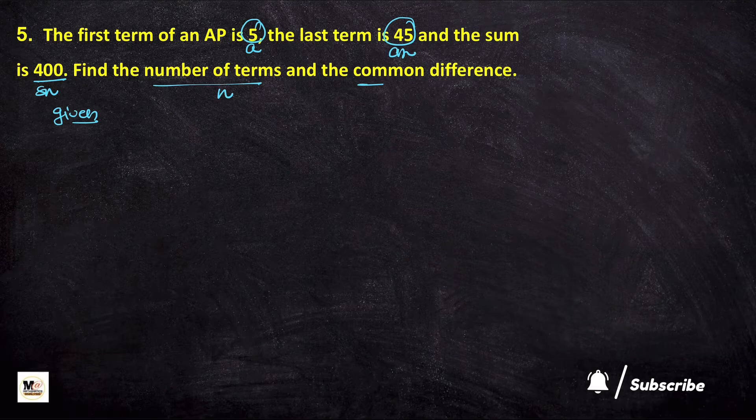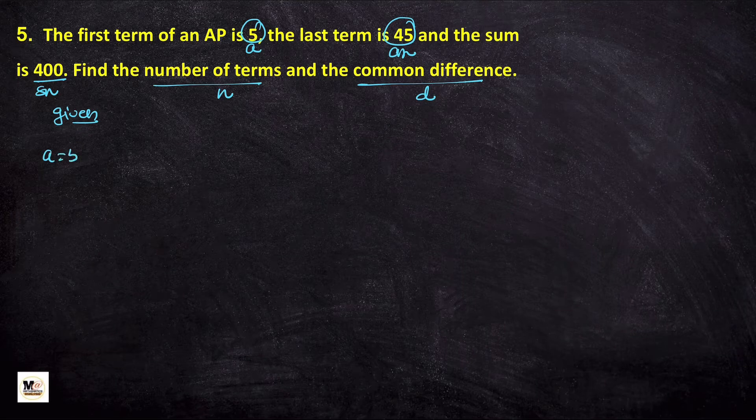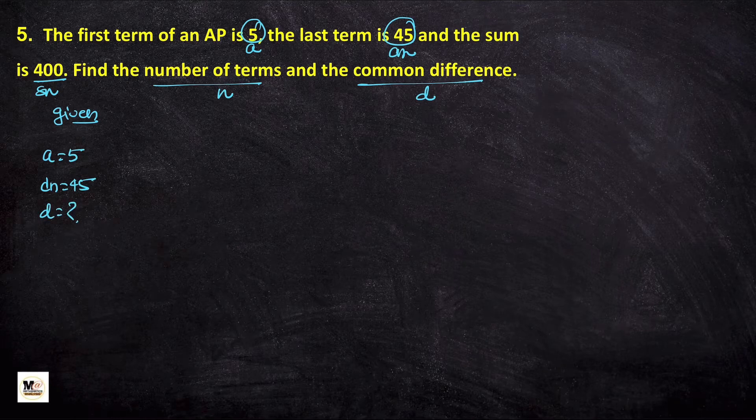So given to us, we have a equals 5, the last term is 45, and Sn equals 400.